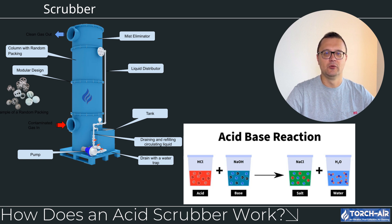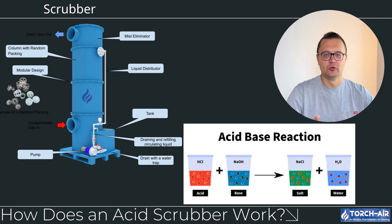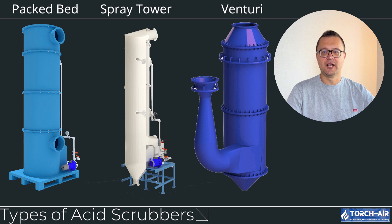Step 3 — Gas-liquid reaction. The acidic gases in the exhaust stream react with the alkaline scrubbing liquid in a process called neutralization. For example, when sulfur dioxide (SO2) reacts with sodium hydroxide (NaOH), it forms sodium sulfate (Na2SO4), a neutral compound. Step 4 — Clean gas exits. The now neutralized gases are free of harmful acids and exit the scrubber through a mist eliminator, ensuring that no liquid droplets escape with the clean air.